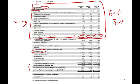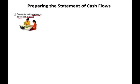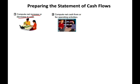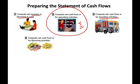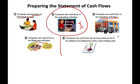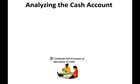The steps in preparing the statement of cash flows are: Step 1 — compute net increase or decrease in cash; Step 2 — compute cash from operating activities (which has five sub-steps); Step 3 — compute net cash from investing; Step 4 — financing; and Step 5 — add the change to the beginning cash balance. We're only focusing on the operating step for now.